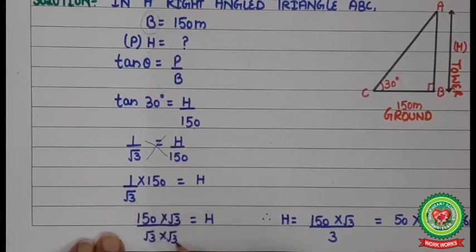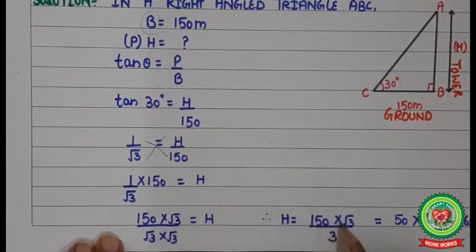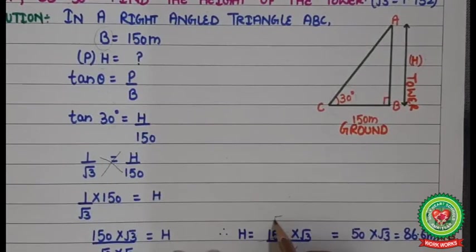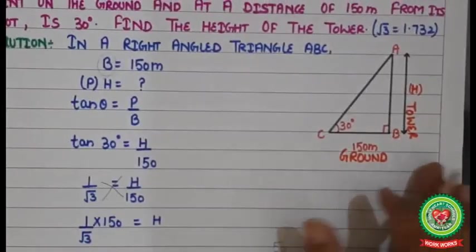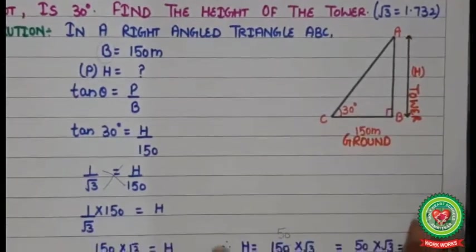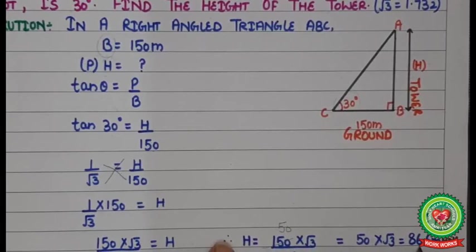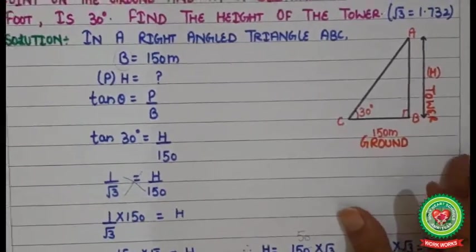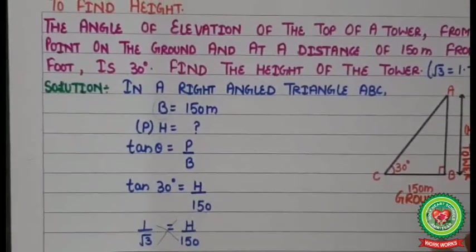We rationalize the denominator by multiplying numerator and denominator by √3. This gives 150√3 / (√3 × √3) = 150√3 / 3. After simplification, we get 50√3. The value of √3 is given as 1.732, so multiplying: 50 × 1.732 = 86.6 meters. Therefore, the height of the tower is 86.6 meters. This was the solution to question number 1.